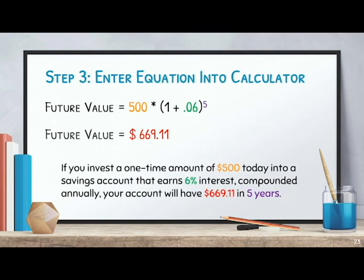And that's by doing nothing — all you did was invest your $500, and that interest is what increased the value of the money in your account. That's how you calculate the future value of a one-time investment using the future value formula. I hope this was helpful, and thank you for listening.